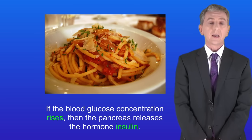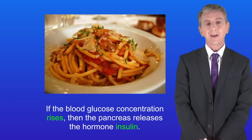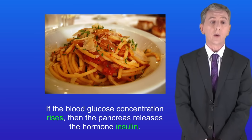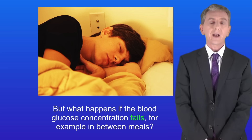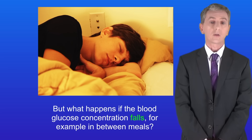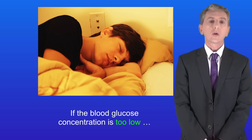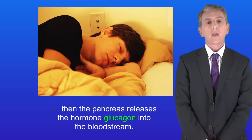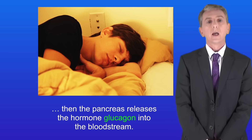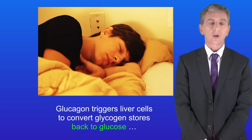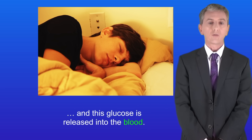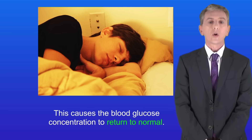As we've seen, if the blood glucose concentration rises then the pancreas releases the hormone insulin. But what happens if the blood glucose concentration falls, for example in between meals? If the blood glucose concentration is too low then the pancreas releases the hormone glucagon into the bloodstream. Glucagon triggers liver cells to convert glycogen stores back to glucose, and this glucose is released into the blood, causing the blood glucose concentration to return to normal.